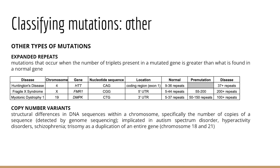I want to introduce the idea of anticipation. As a triplet repeat expands from replication to replication, the severity of the disease tends to worsen in future generations and the age of onset decreases — this is the concept of anticipation. Sometimes the severity depends on whether the disease is inherited from the father or mother. In Huntington disease, the trinucleotide repeat is more likely to expand if inherited from the father. In myotonic muscular dystrophy, the disease is more likely to worsen if inherited from the mother.